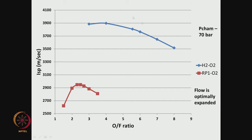For the overall system sizing, it depends on the O/F at which it is operated. A graph of O/F versus ISP is shown for hydrogen-oxygen (blue line) and kerosene-oxygen (red line) at 70 bar with optimally expanded flow. For hydrogen-oxygen, an O/F of around 5.5 gives the best specific impulse, whereas for liquid oxygen and kerosene, an O/F of around 2.5 is optimal.